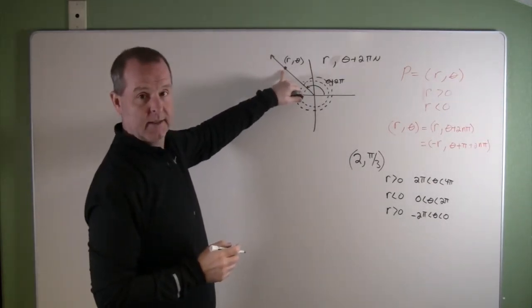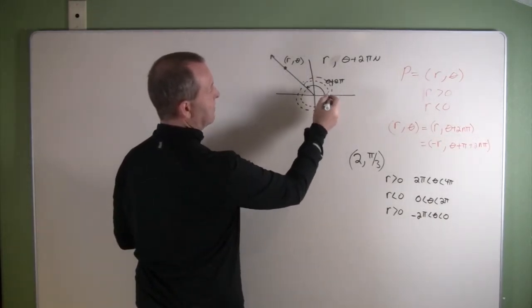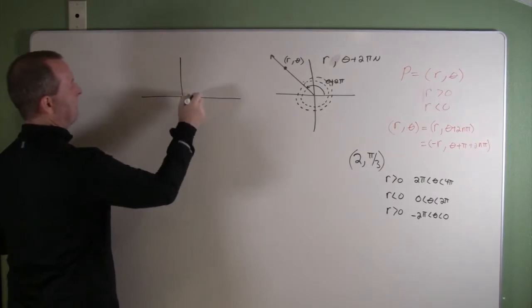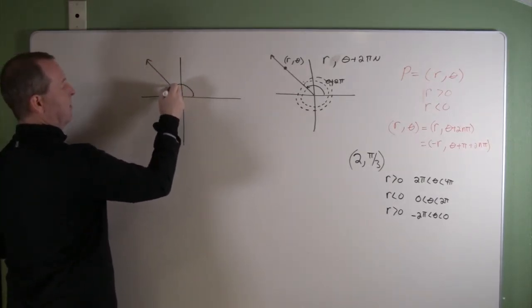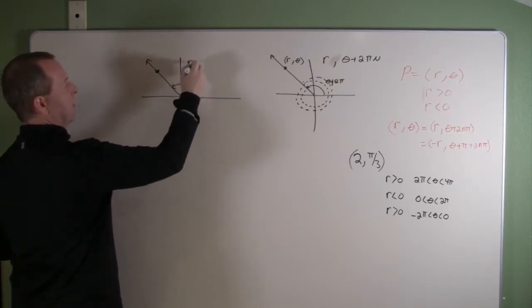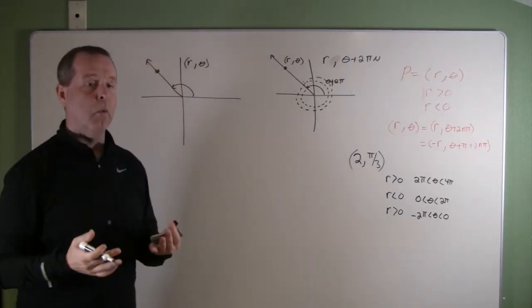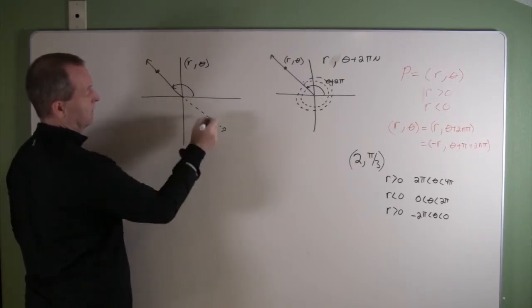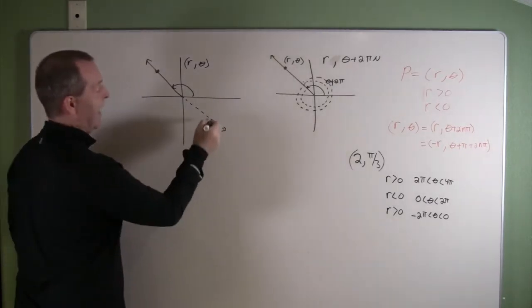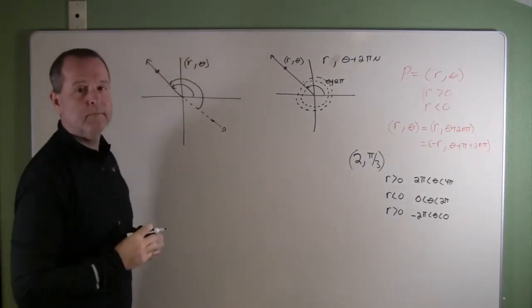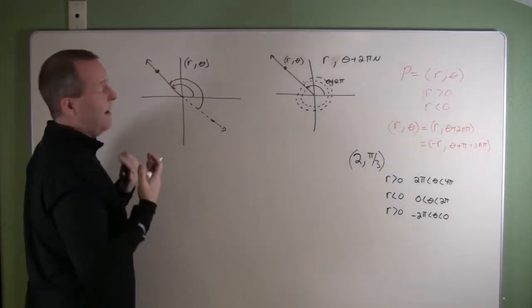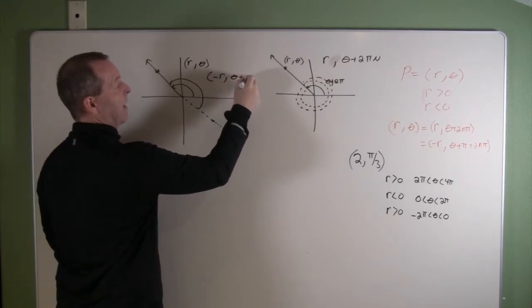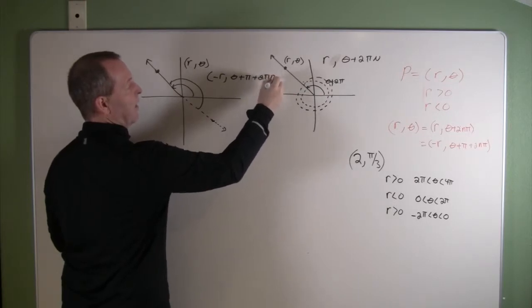Another way that I can get to that same point is, I have originally that point with some θ right there. What if I went that θ, got to here, but then I went backwards in r to have some point there, and then from there I added π to it? I would get back to this original point. So this point is also equal to the point negative r, θ plus π, plus as many rotations around that circle that I want to go.